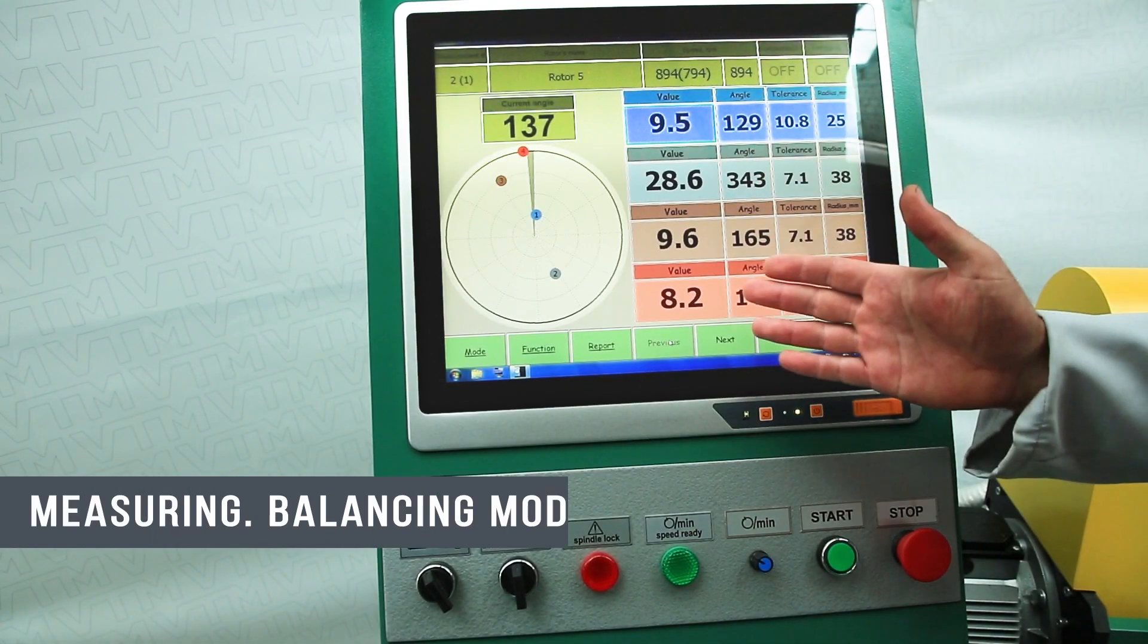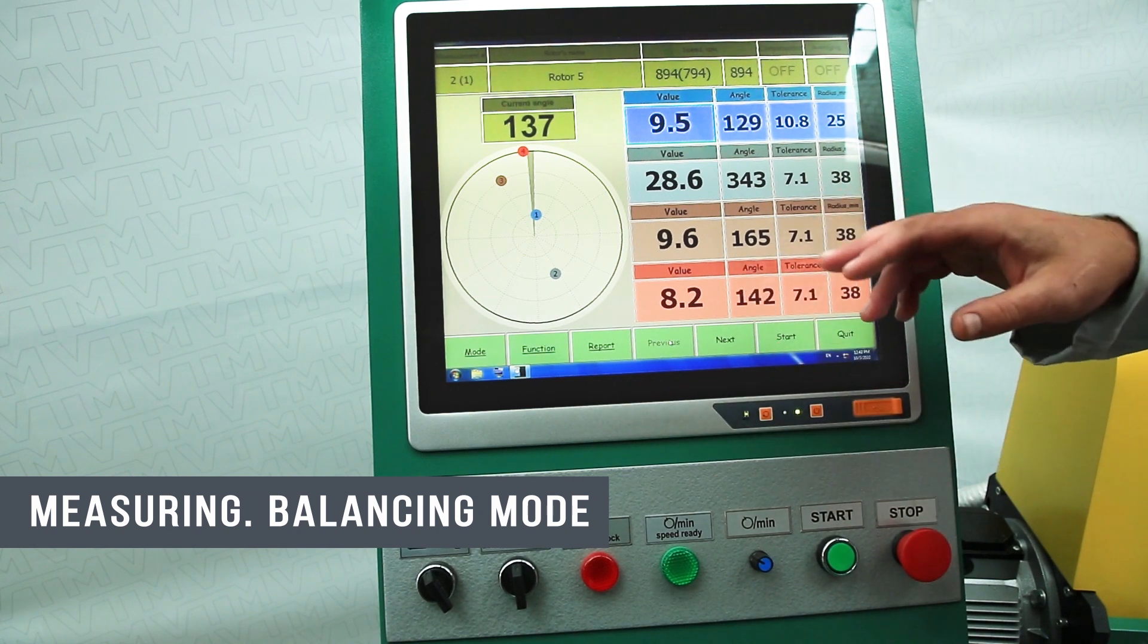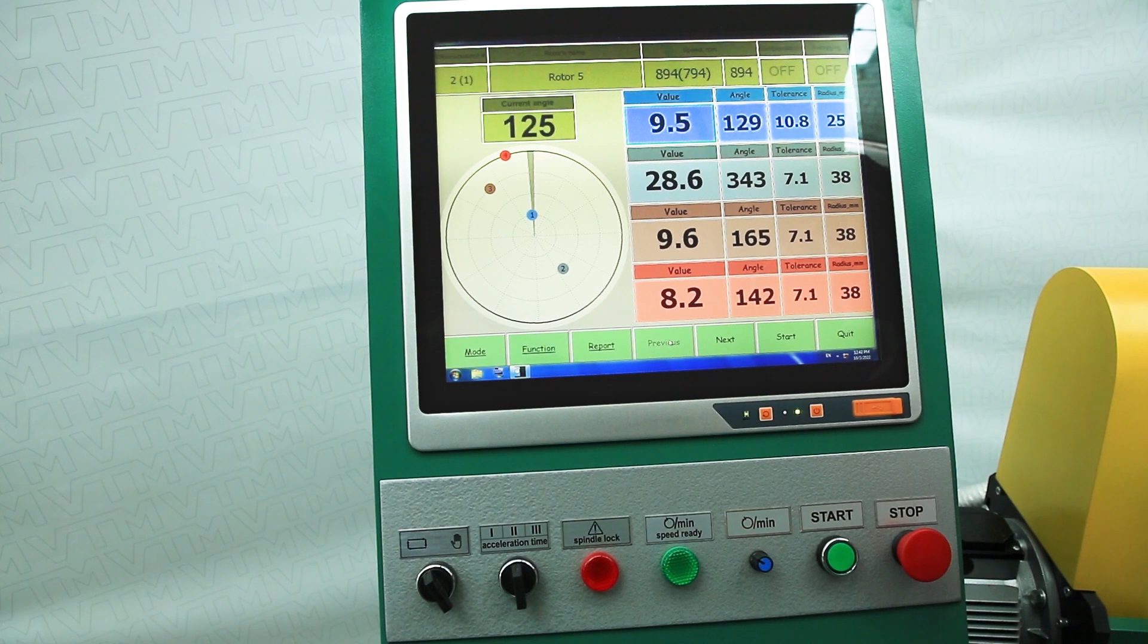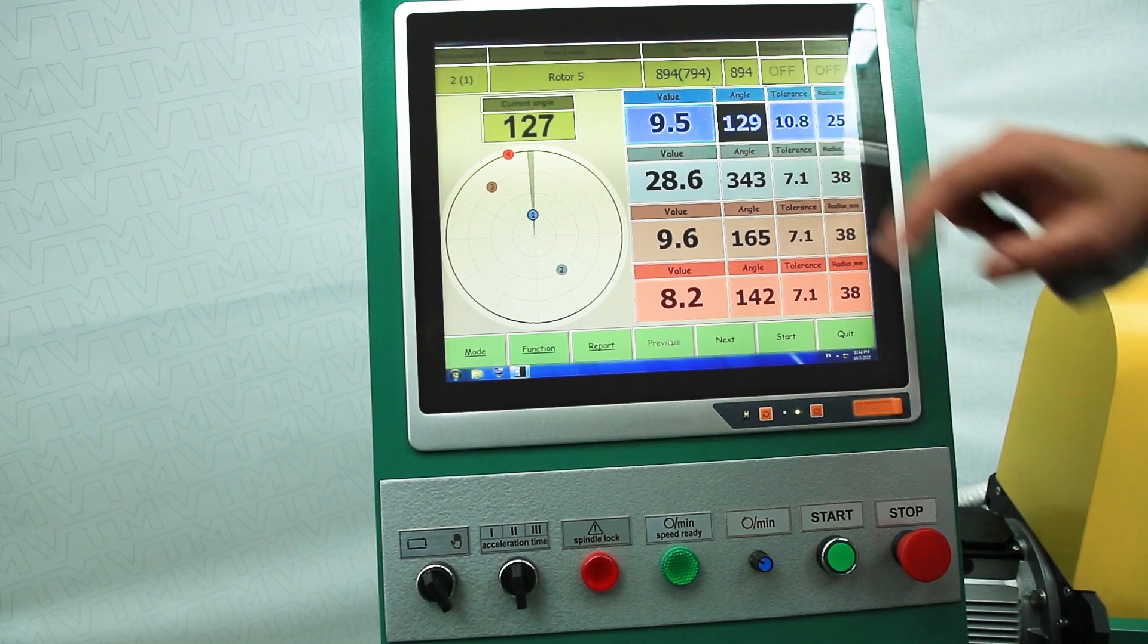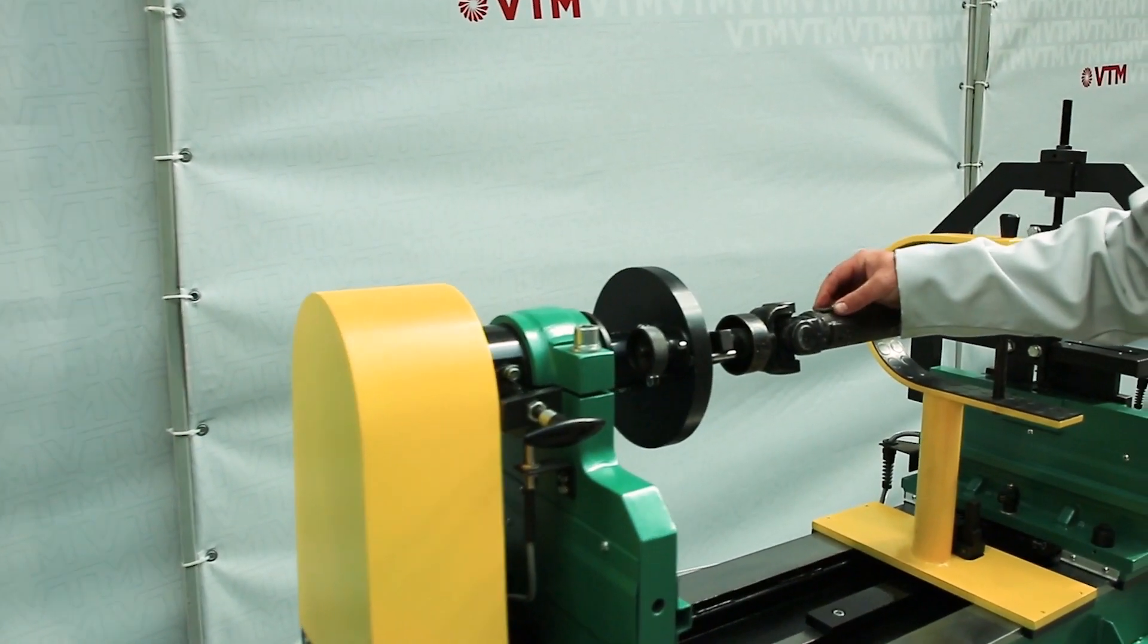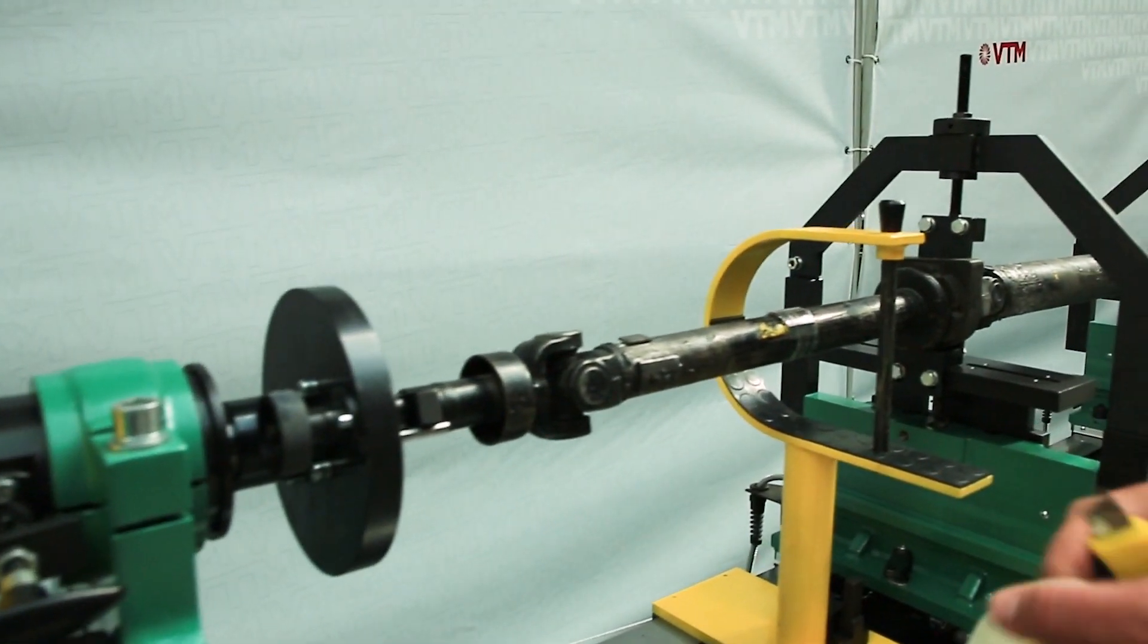Further, when we have received the measurement results, we will make corrections. In this case, we bring the angle on the first plane to the angle 129 and hang 10 grams available on it. Vertically from above we install our 10 gram weight and fix it.